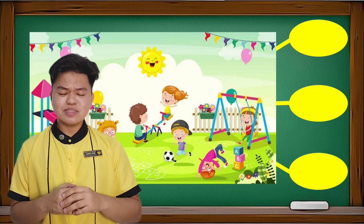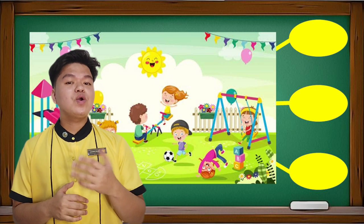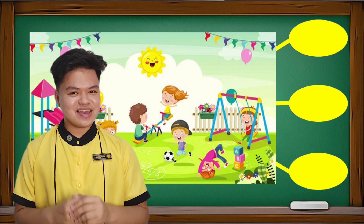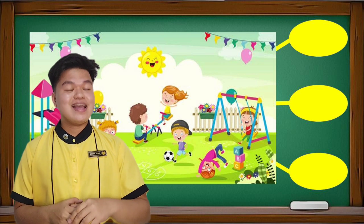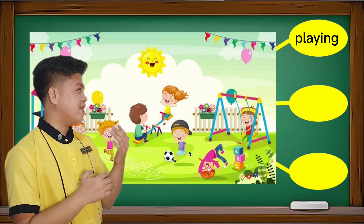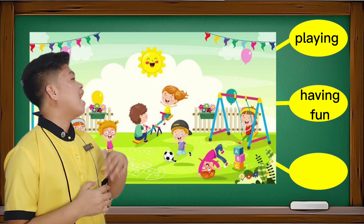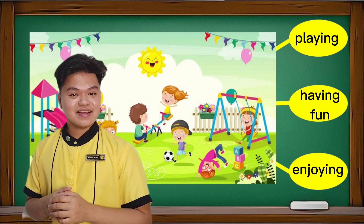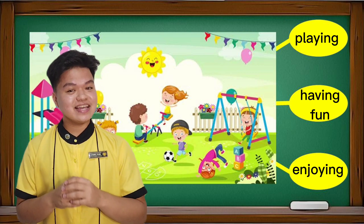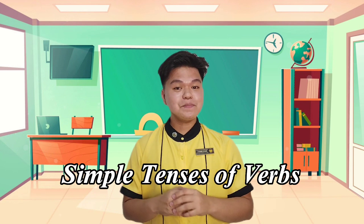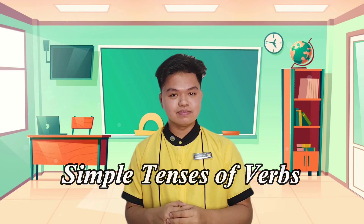What are the children doing in this picture? What action words do you associate by saying this? That's right! They are playing, having fun, and enjoying. Now, this hints our topic for today. Today, we will talk about simple tenses of verbs.